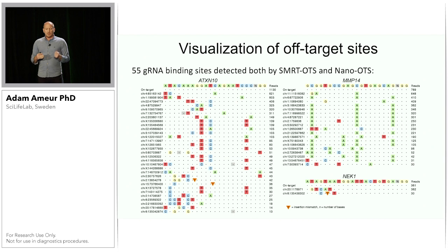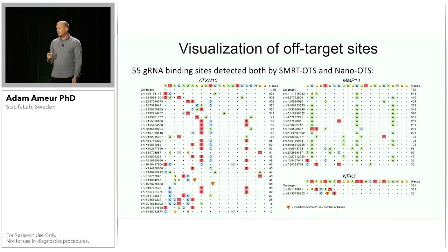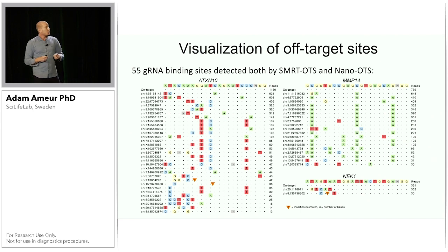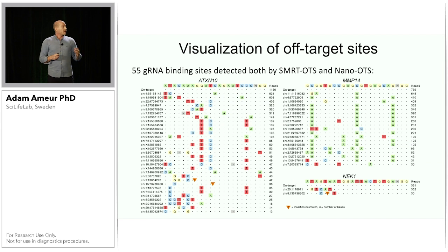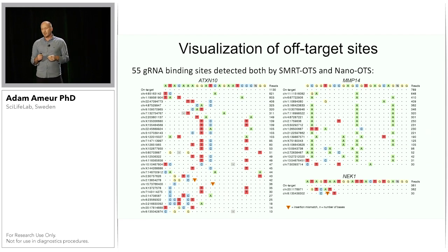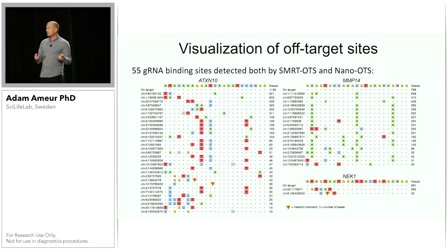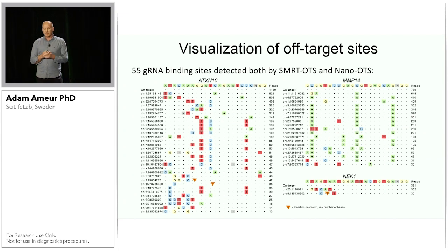Summarizing all results, in total we found 55 off targets by both methods. Most of them were for ATXN10, then a bunch for MMP14, and about two or three for NEC1. Mismatches are illustrated by colored boxes in the figures. We also find in some cases insertion or deletion mismatches where we still get guide RNA binding.